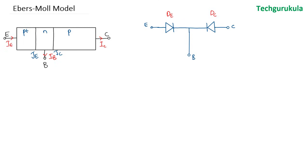Hence we cannot simply say this model represents a BJT completely — these two diodes are non-interacting, whereas in a BJT the junctions are interacting. To represent that, the current flowing through the emitter junction is I_F. Because of this current flowing through the emitter junction, there would be a current flowing through the collector junction dependent on I_F, which is α_F times I_F. Let's represent that as a current-dependent current source.